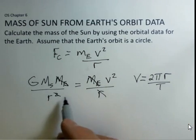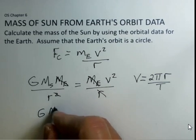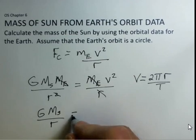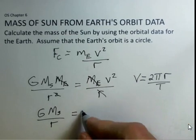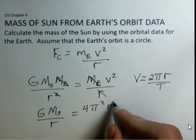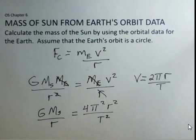So G M_S over R. I'm going to put in now the square of the speed: 4 pi squared R squared over T squared. And now, let's solve for the mass of the Sun.